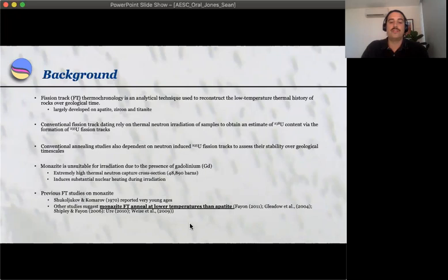But what we do know about fission tracks in monazite, based on the limited amount of studies that have been performed, is that they all suggest that monazite fission tracks anneal at lower temperatures than apatite.